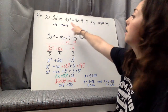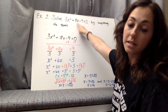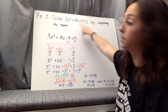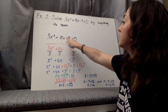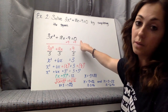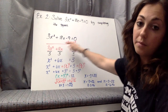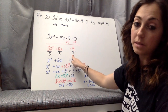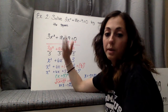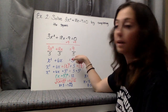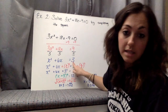Next, Example 2: Solve 3x squared plus 18x minus 9 equals 0 by completing the square. We have a trinomial, so we add 9 to each side, giving us 3x squared plus 18x equals 9. Remember, a has to be 1, but here a is 3. Since it's an equation, we divide everything by 3, and we're left with x squared plus 6x equals 3.